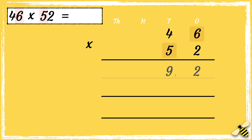Now that we have zero as our placeholder, we can multiply five tens by six — five times six is thirty. We can drop the three below in the hundreds column. Then we need to work out five tens multiplied by four tens — five times four is twenty, and we need to add the extra three, so it's twenty-three.